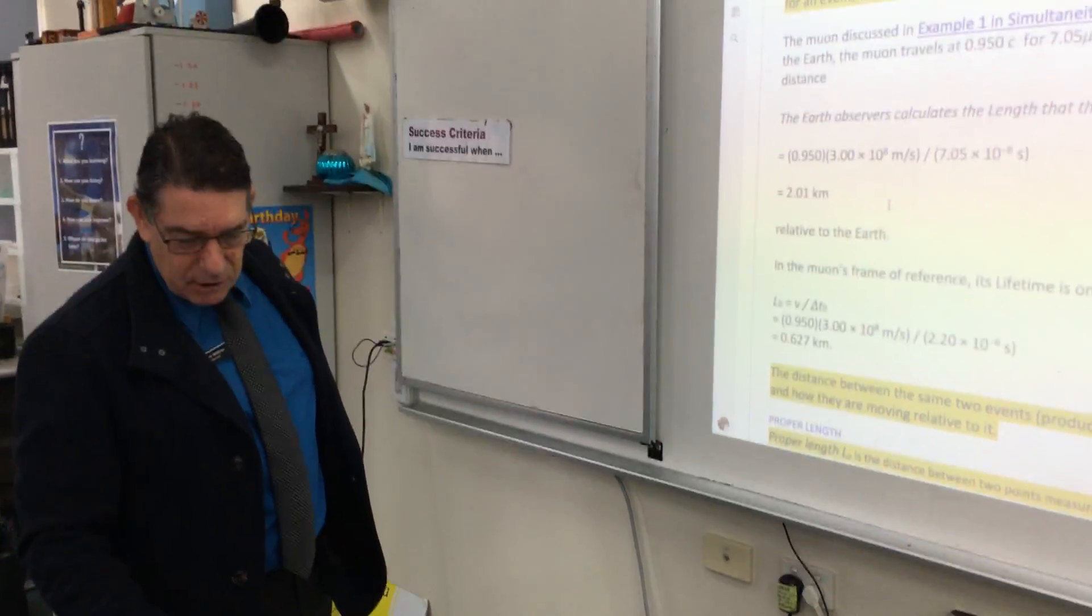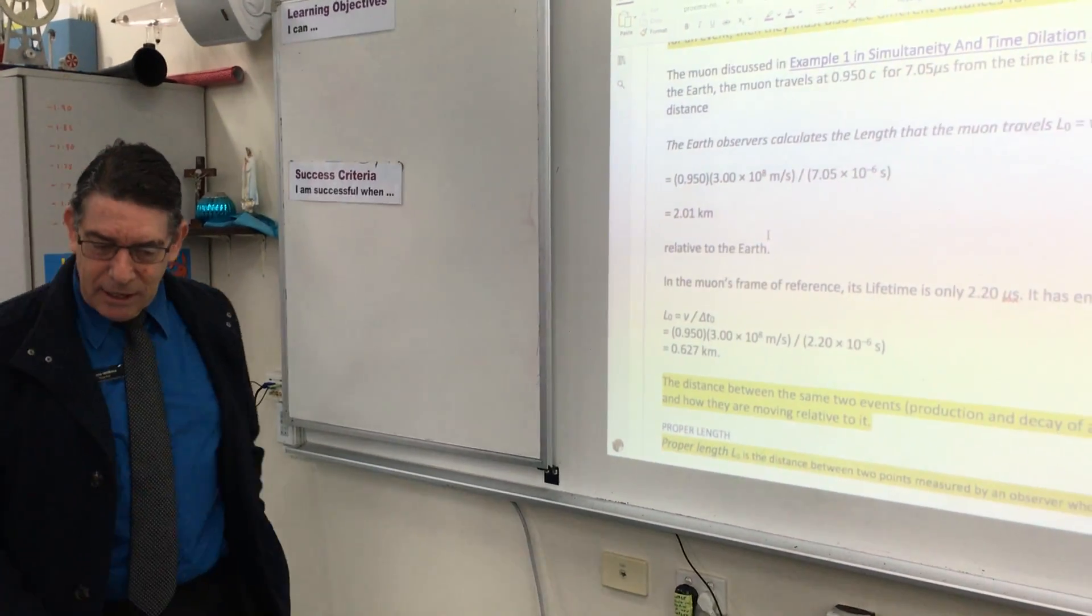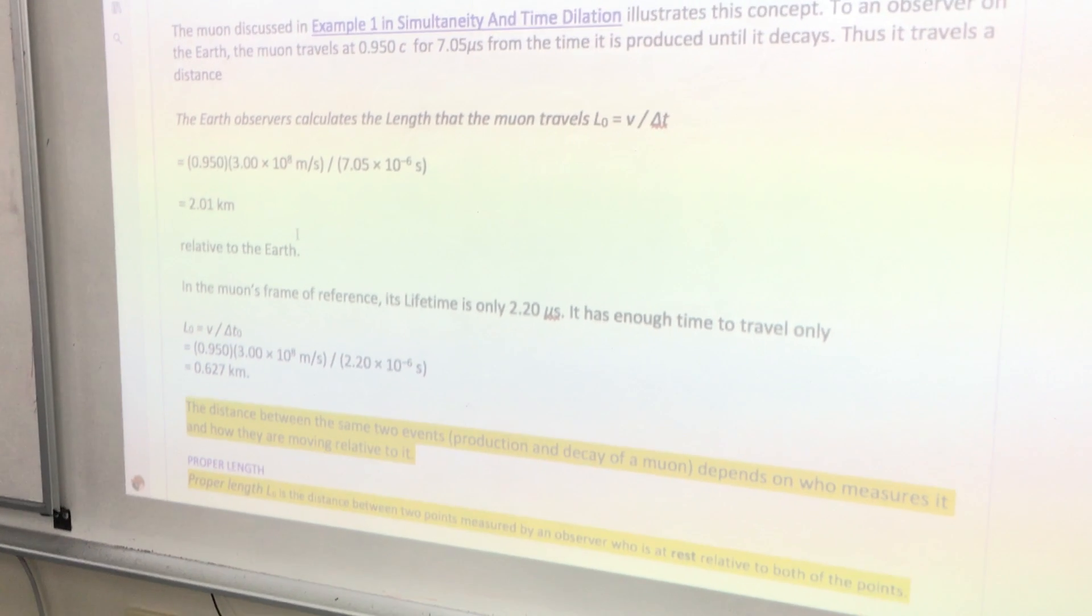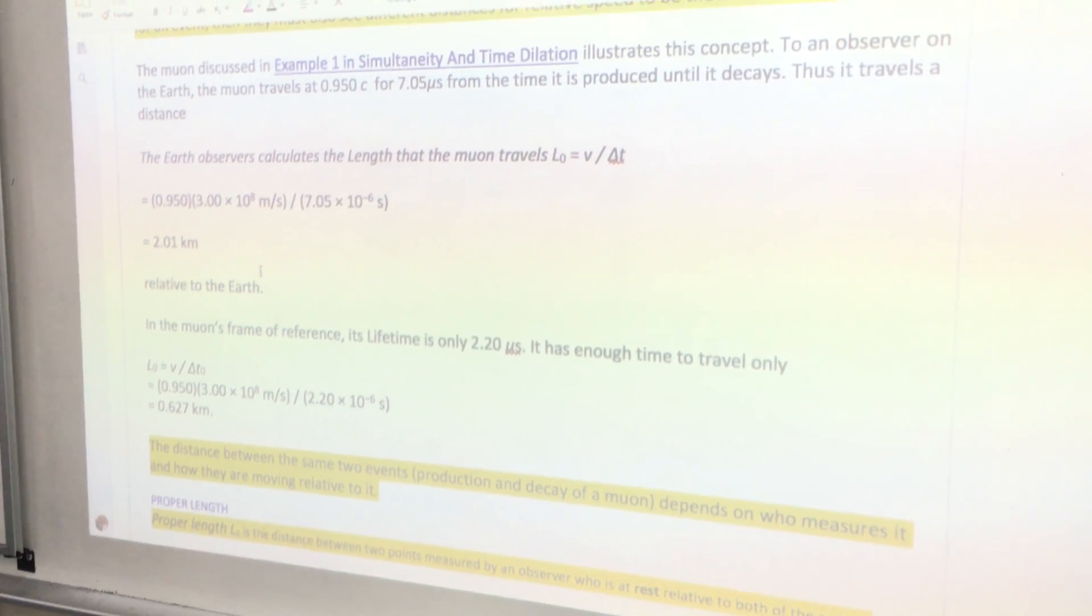And when you work that little bit out there, you find out that during that 0.705 microseconds, it appears that the muon is travelling 2.01 kilometres.